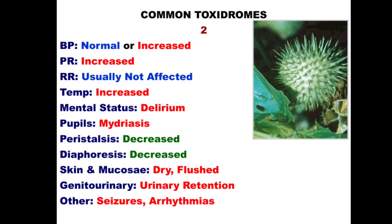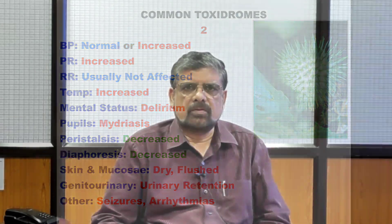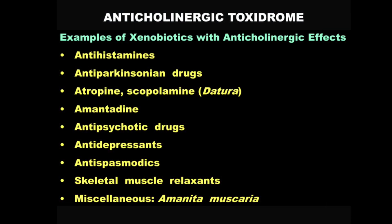Moving on to the second common toxidrome. You will notice that this is exactly a mirror image — the opposite — of toxidrome number one. Almost every manifestation is just the opposite; everything has been reversed. Toxidrome number two is therefore the antithesis of toxidrome one, and that is why it's called anticholinergic toxidrome. The most important examples are anticholinergic drugs including antihistamines, antiparkinsonian drugs, atropine and belladonna alkaloids, antipsychotic drugs, antidepressants, antispasmodics, skeletal muscle relaxants, and some mushrooms. It's a big but important list.